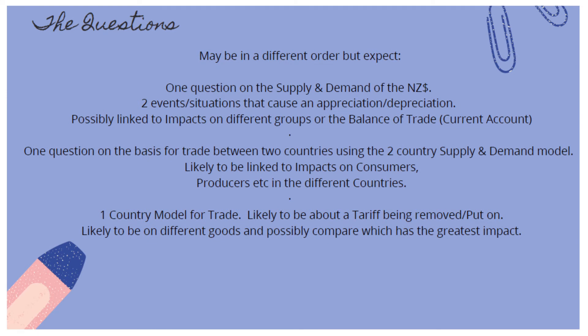There will likely be a question about the supply and demand of the New Zealand dollar — events and situations that will cause an appreciation (dollar going up) or a depreciation (dollar going down), possibly linked to impacts on other groups or the balance of trade and the current account. There should be a flow diagram in your workbook: if the dollar depreciates, this happens, then this happens, and it will have this impact on the balance of trade. Do two different tree diagrams — one for appreciation and one for depreciation.